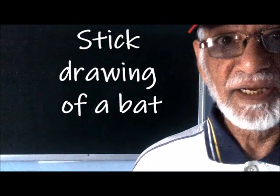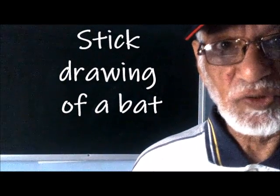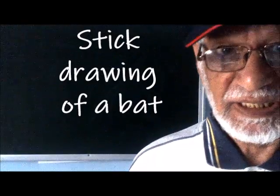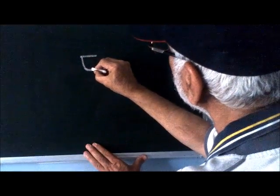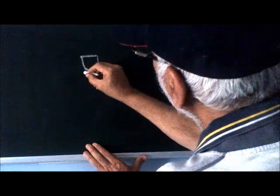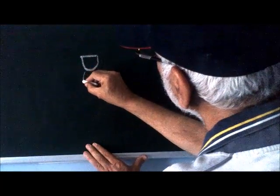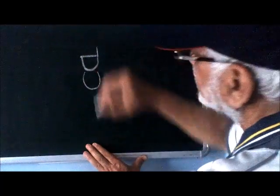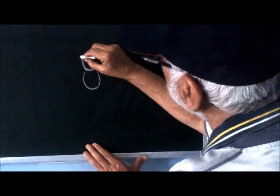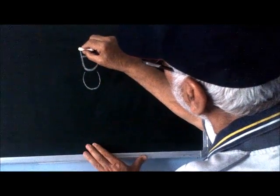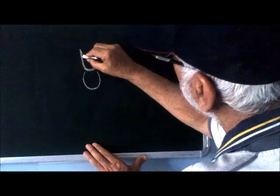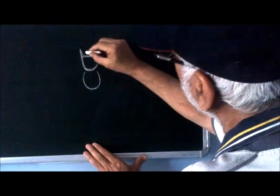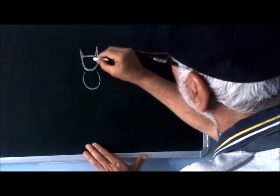Today we will make the stick drawing of a bat. Make a structure like this and another structure like this. Extend this line, extend this line and make opening lines.